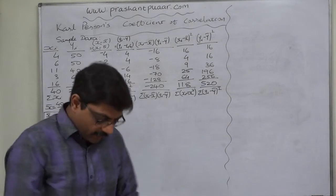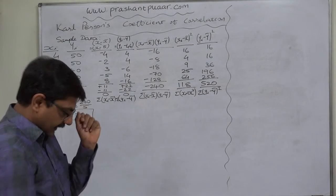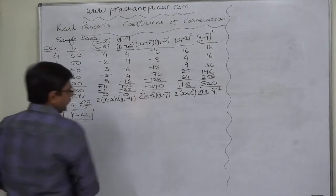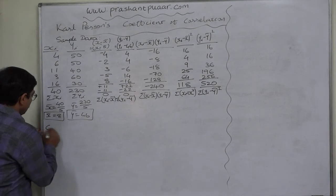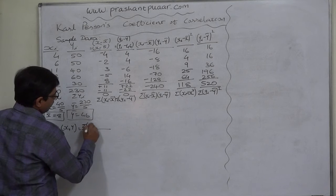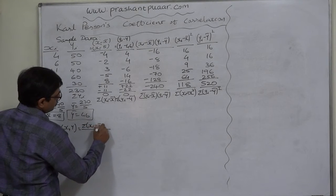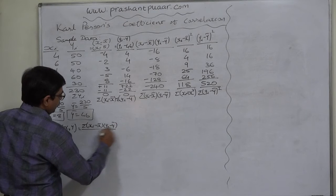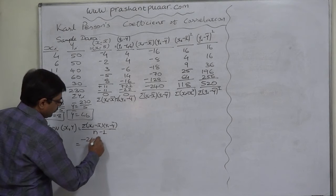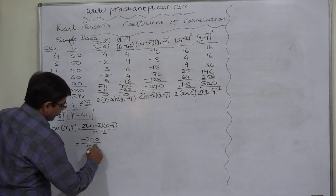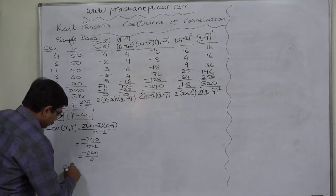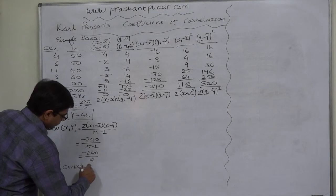Now we have all the raw materials to calculate covariance, standard deviation of x and standard deviation of y. Covariance of x and y equals the summation of (x minus x-bar)(y minus y-bar) divided by n minus 1, because this is sample data. That gives −240 divided by 4, so the covariance of x and y is −60.